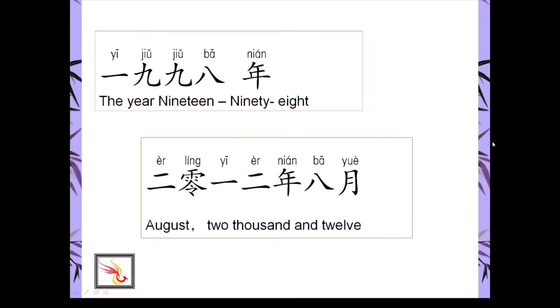Er ling yi er nián ba yuè — August 2012. So the year comes first, then the month. Er ling yi er nián ba yuè.